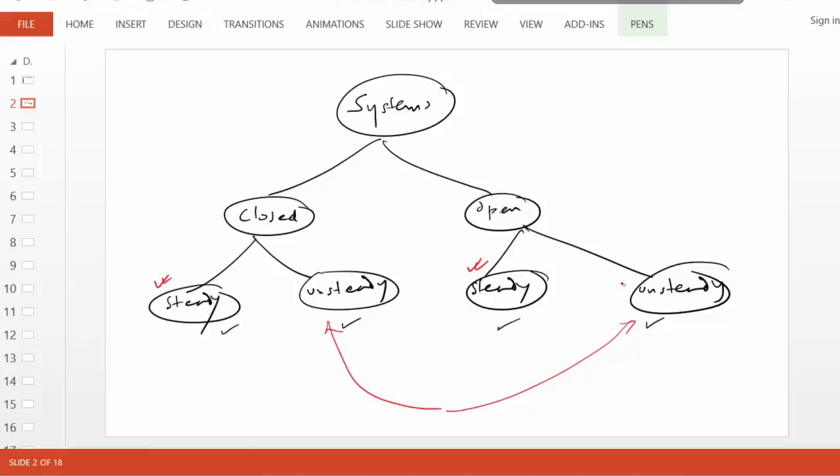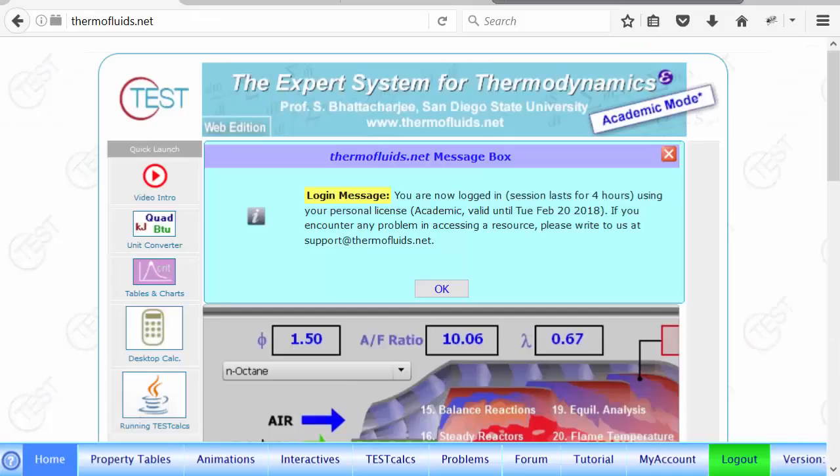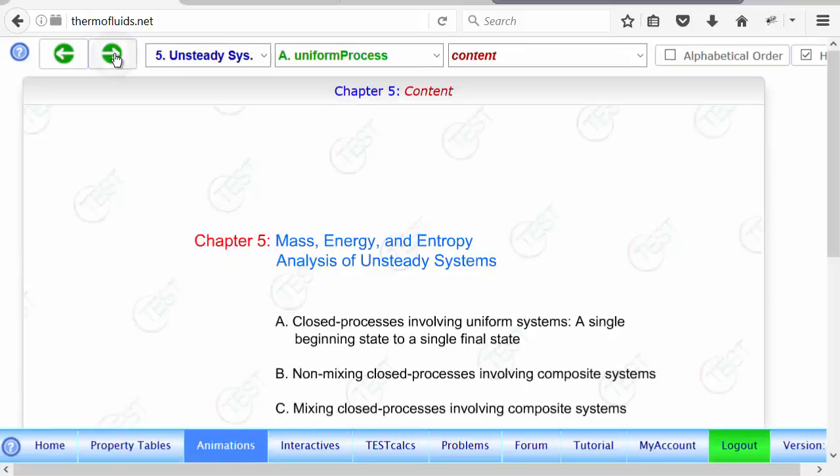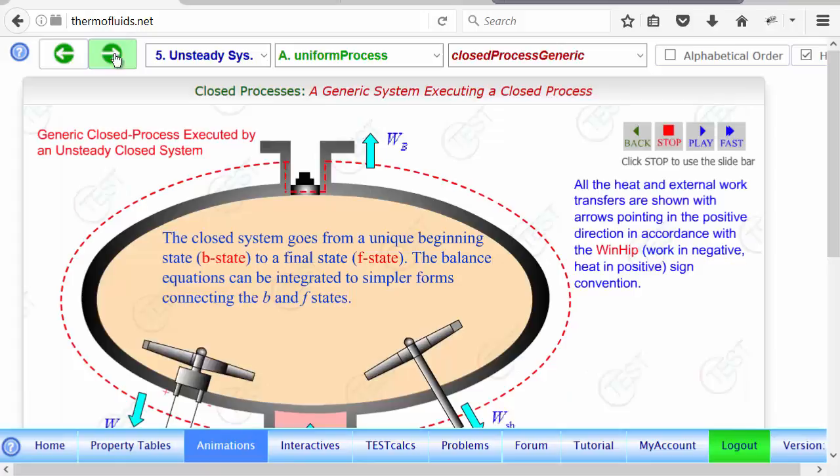Okay, so let's go with an animation to establish a closed unsteady system. Okay, there we go. So let's pause the animation. First of all, the system is closed. As you can see, there is absolutely no mass going in or out. But there are all these other kinds of interactions, heat and work interactions.